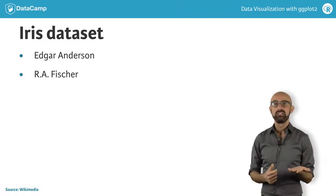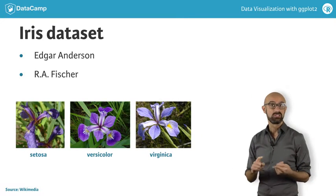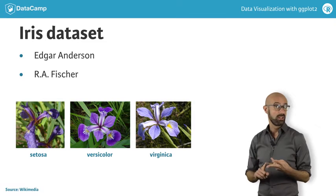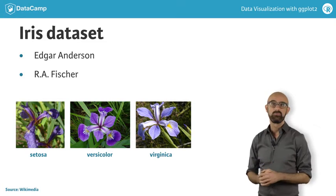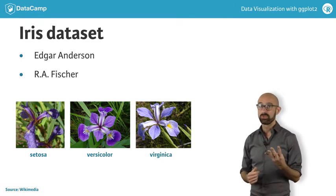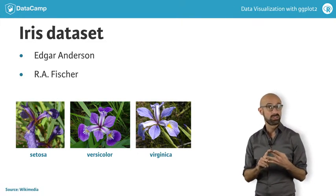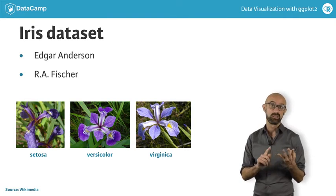The dataset contains information on three iris species: Setosa, Virginica, and Versicolor. Four measurements were taken from each plant: the petal length and width, and the sepal length and width.